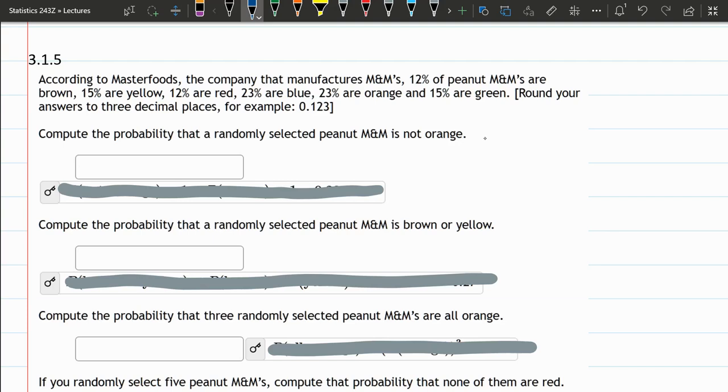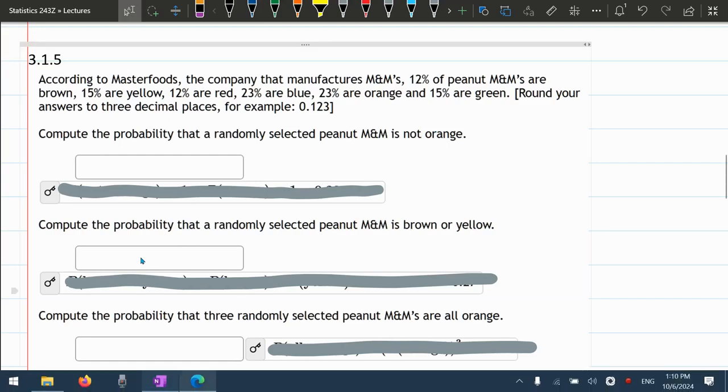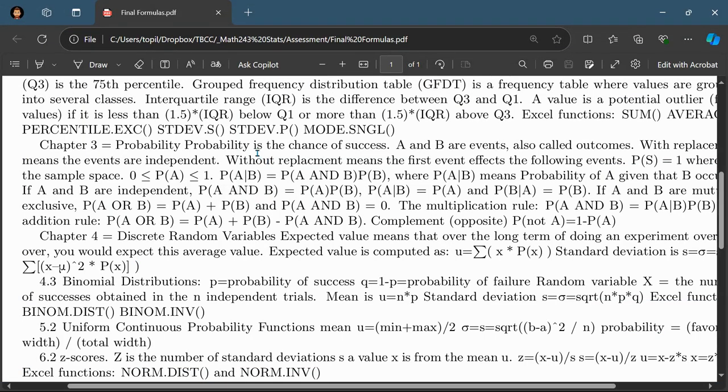We need to compute the probability that a randomly selected peanut is not orange. So in our formula page, not orange is a complement. Here's a complement, which means the opposite probability of something not occurring is 1 minus the probability it does occur.